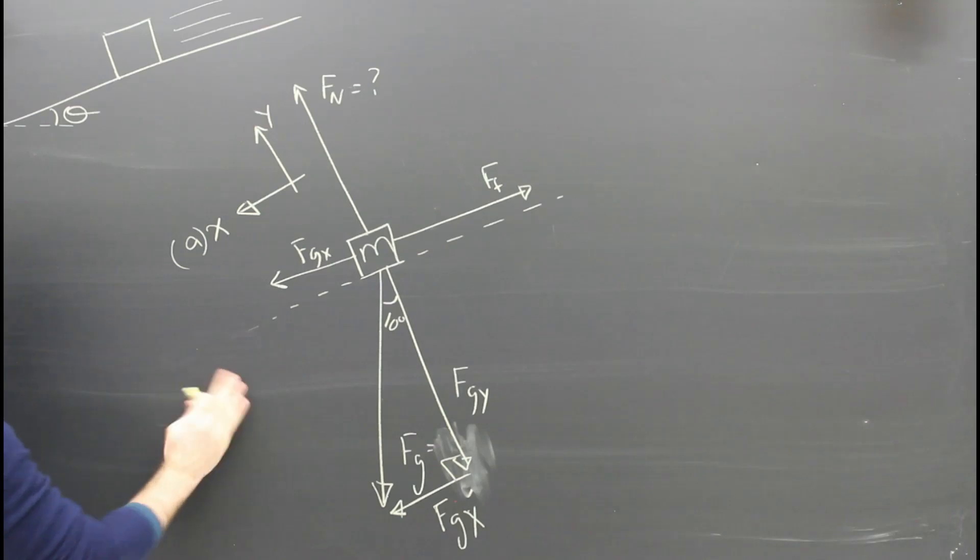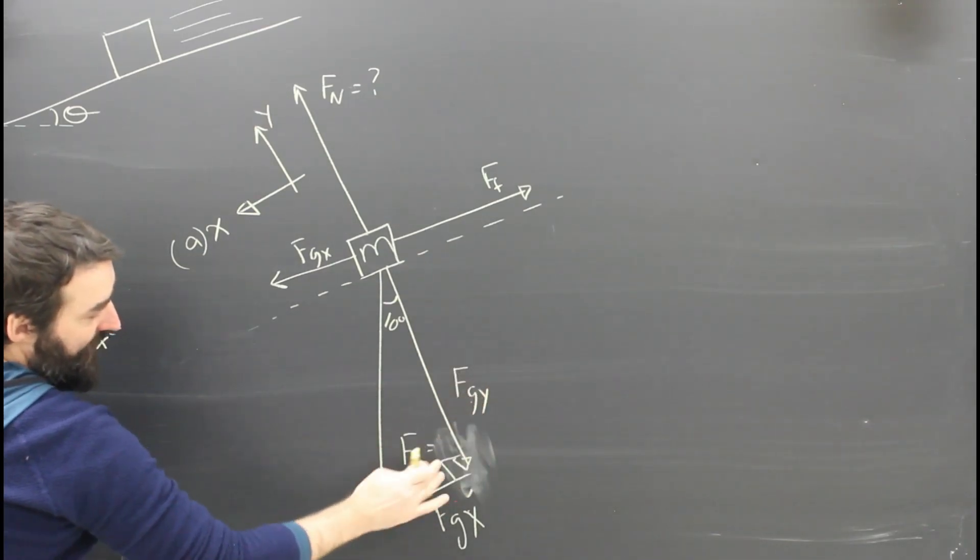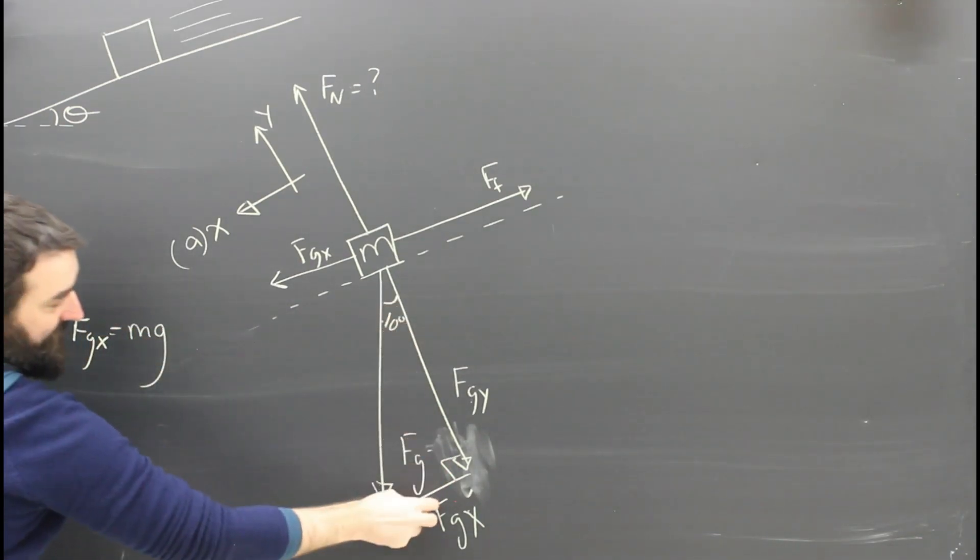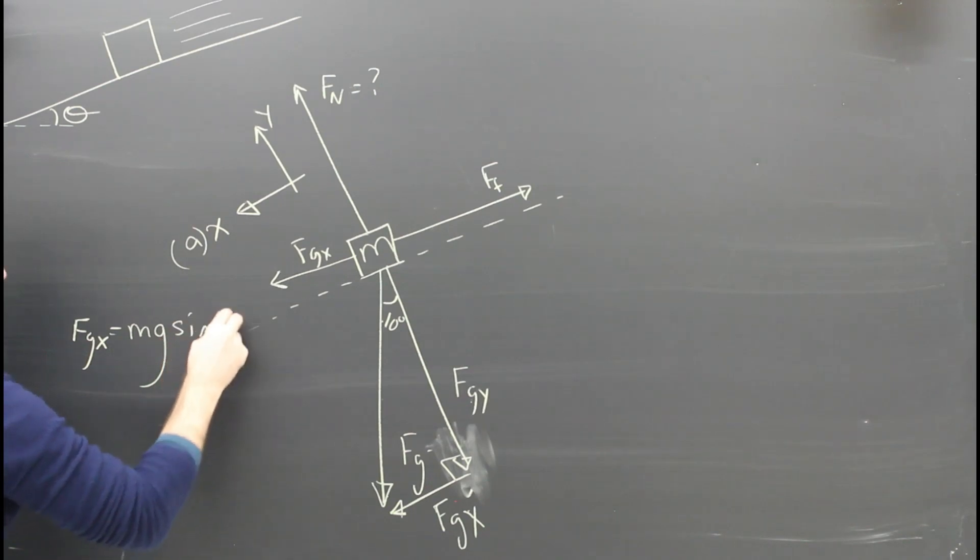So looking at the x and y direction, Fgx is going to be gravity here, which is the hypotenuse, which is mg times sine theta, whereas Fgy is going to be mg cos theta. That should make sense. After you practice two or three times, you'll stop thinking about it and you'll just kind of half memorize that Fgx is mg sine theta and Fgy is mg cos theta. Simple enough.